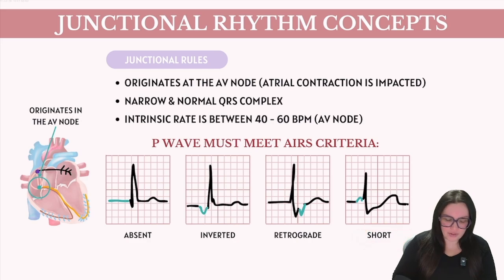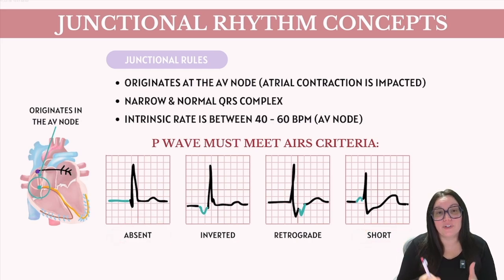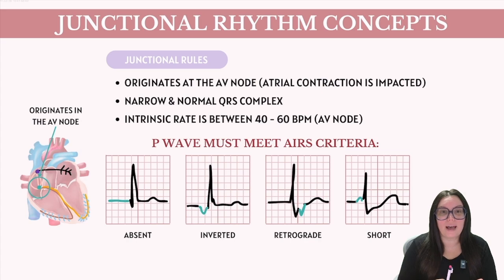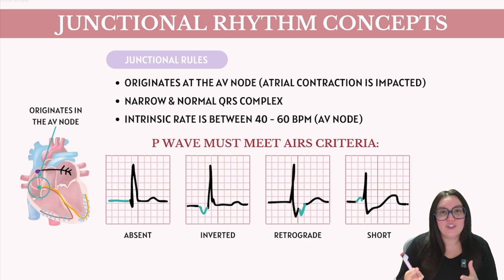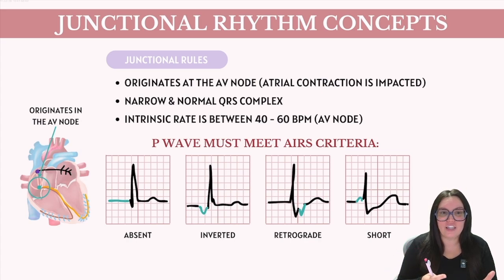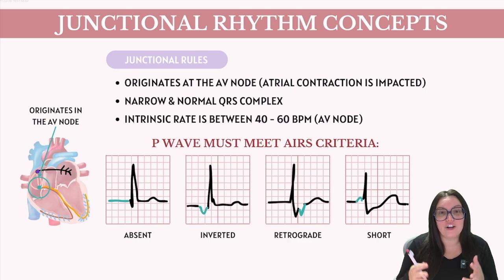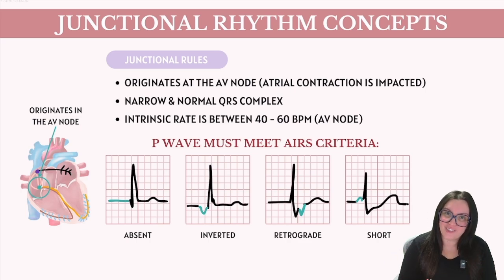Starting with our A for absent P waves — this occurs because the impulse doesn't travel back up towards the atria. So no P wave is going to be formed on the ECG before the QRS complex, as the atria are not activated before our ventricles.